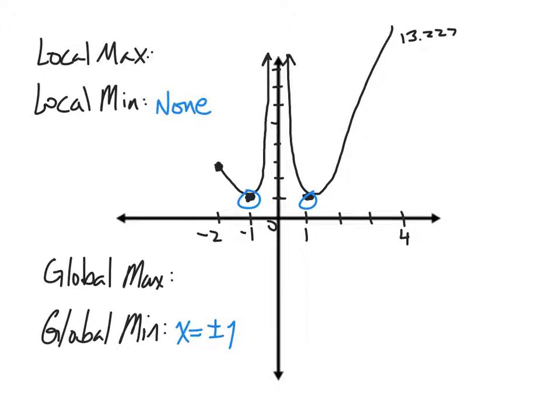When it comes to maximums, there is this local maximum when x is equal to 4. Because locally, that's going to be the largest point there. But there is not going to be any global maximum because this thing is going to grow forever.